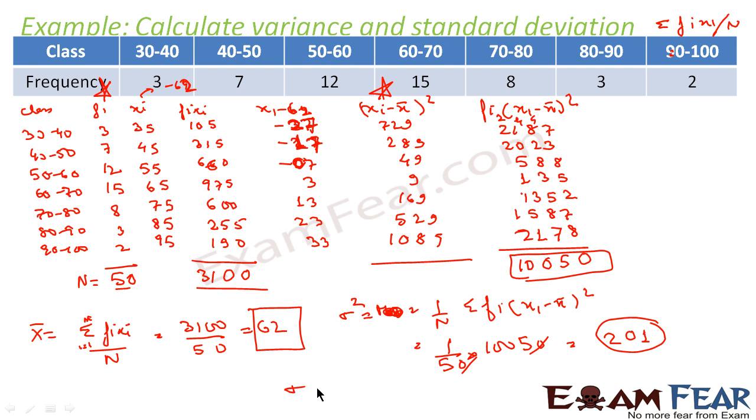To find standard deviation, SD is nothing but the root of variance. That is root of 201, and that value comes out to be 14.18. We have two answers: variance is 201 and standard deviation is 14.18.